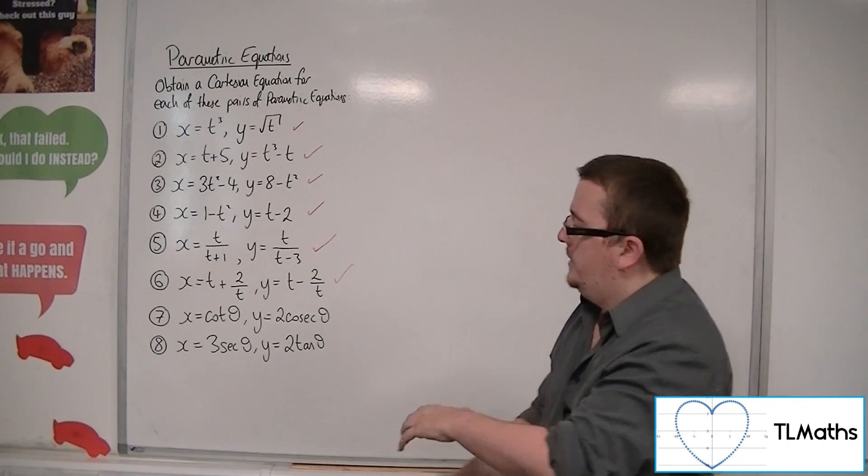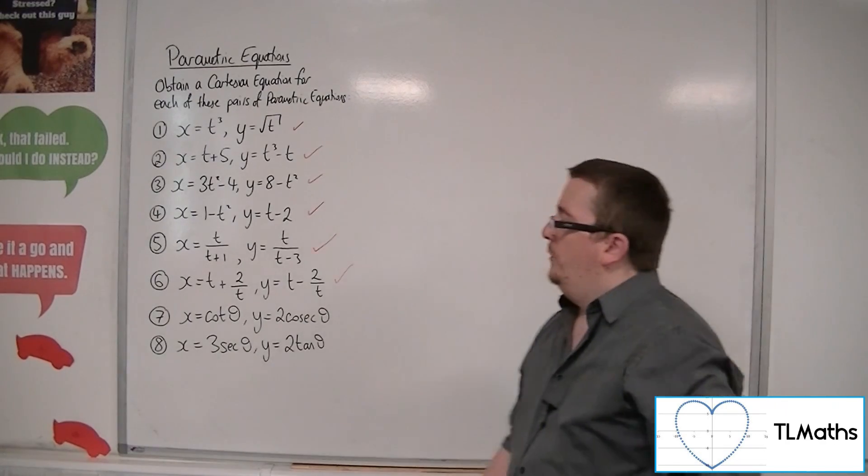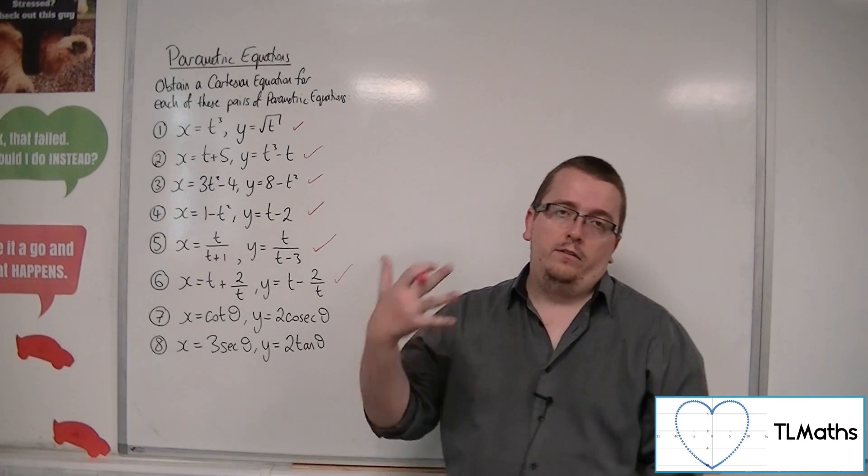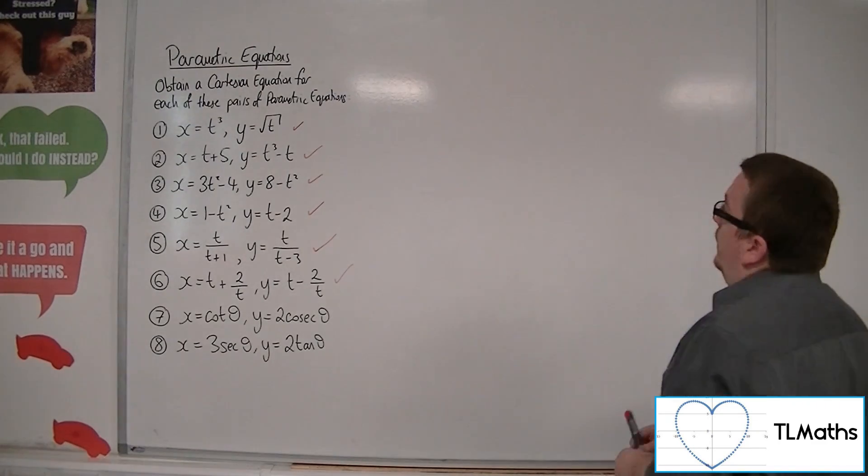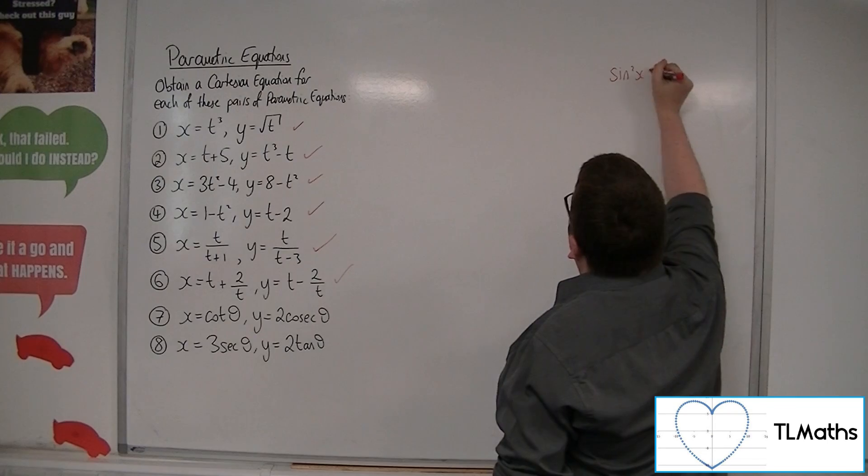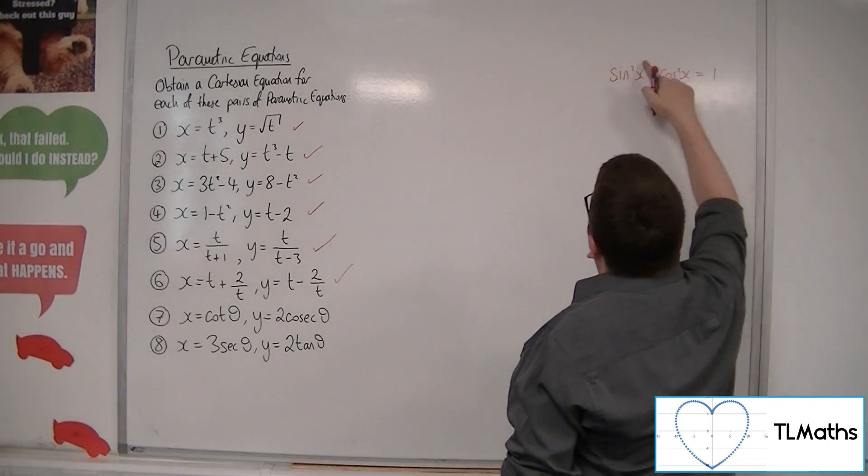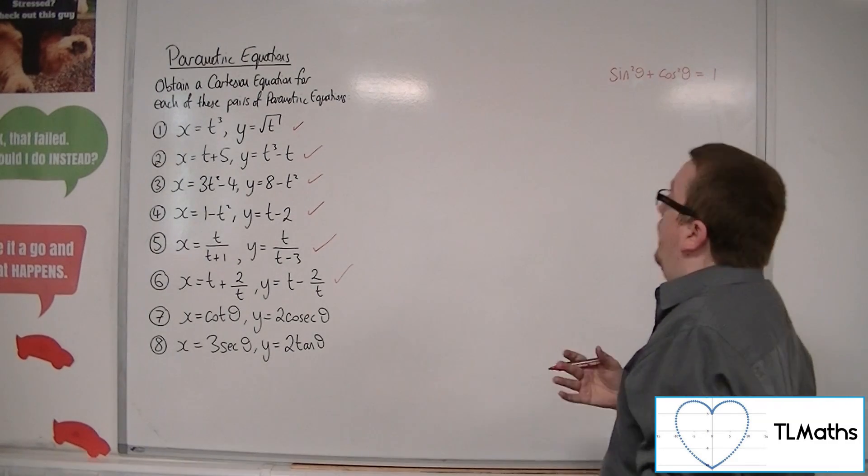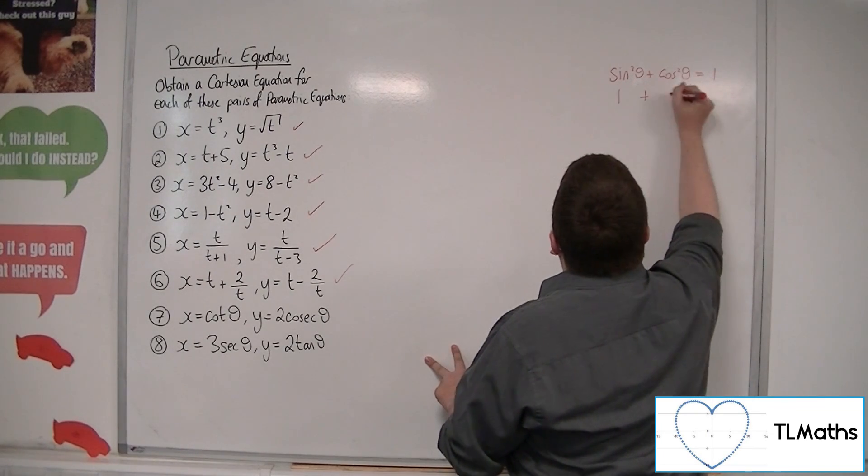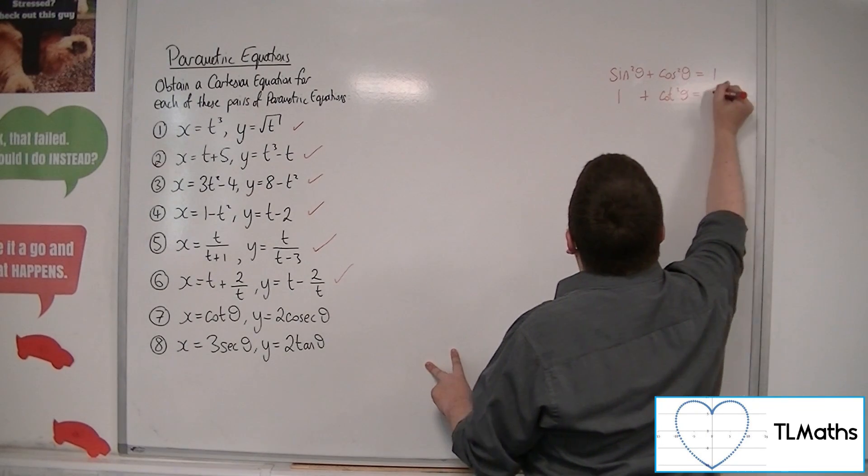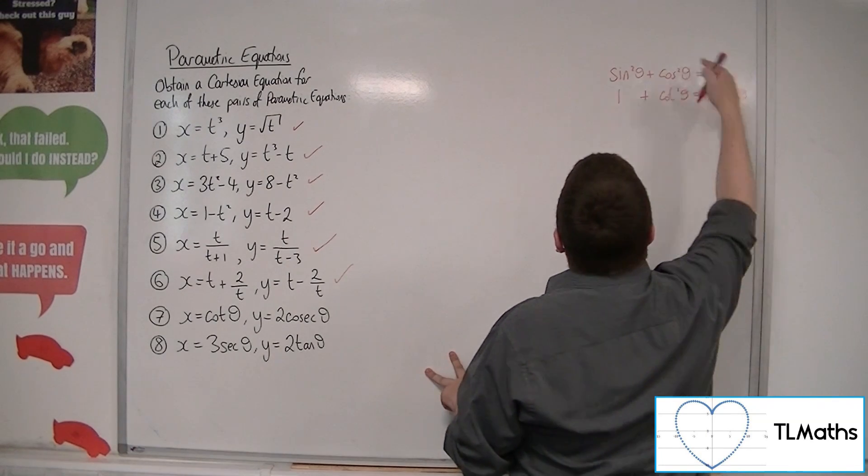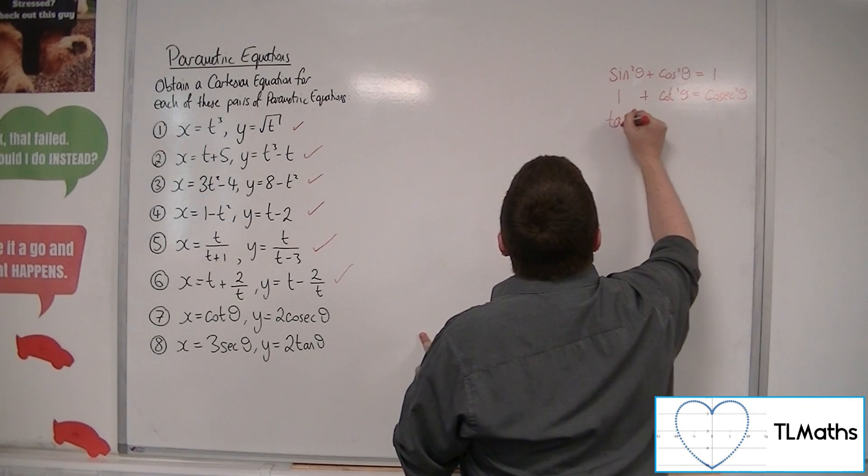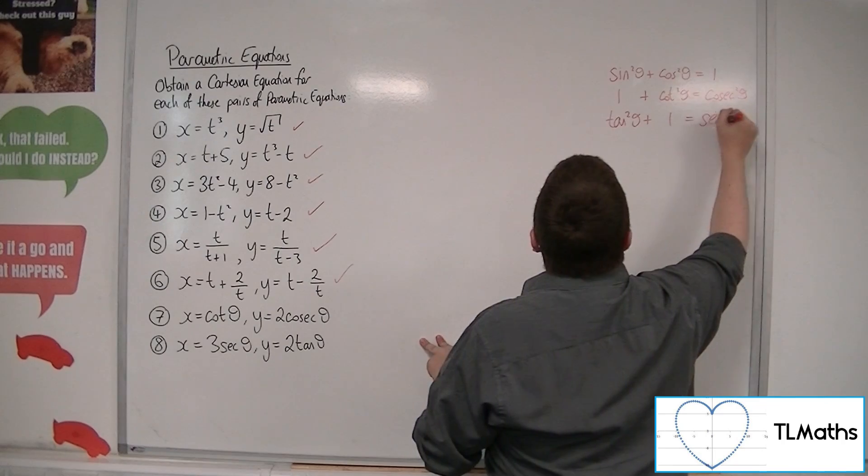Now, when you get on to questions like number 7 and number 8, and you're dealing with these trig functions, what you really need to do is remember what trig identities you have. Now, remember we've got the sine squared plus cos squared is 1. Okay, or theta, if we go with theta. Now, if you divide both sides by sine squared, you get 1 plus cot squared theta is equal to cosec squared theta. And if you divide the original equation by cos squared, you get tan squared theta plus 1 is sec squared theta.